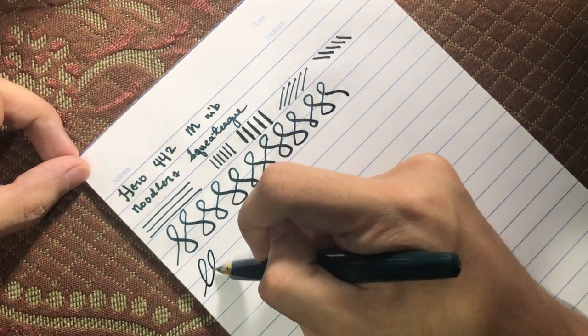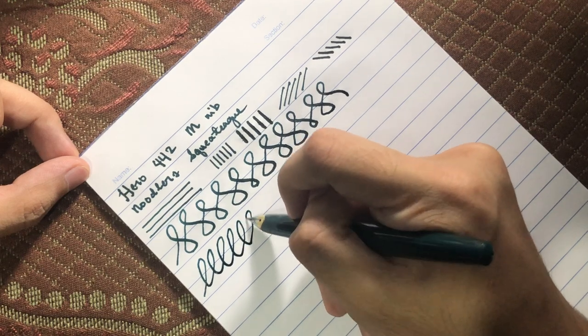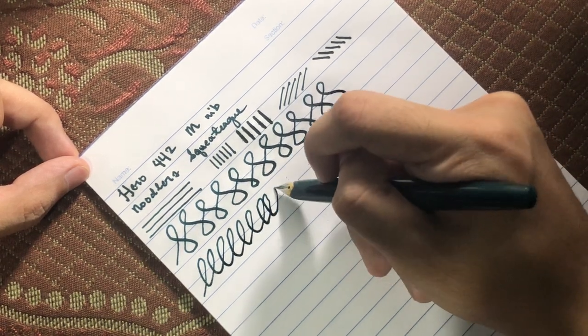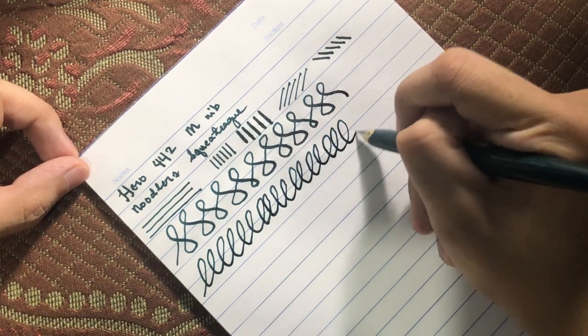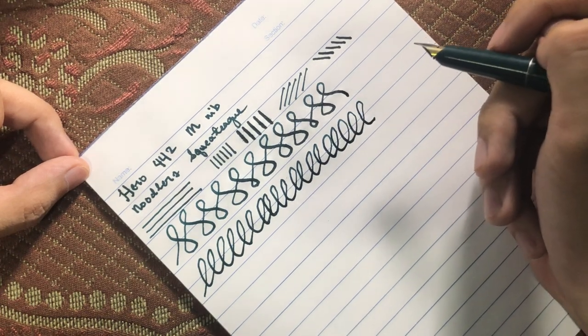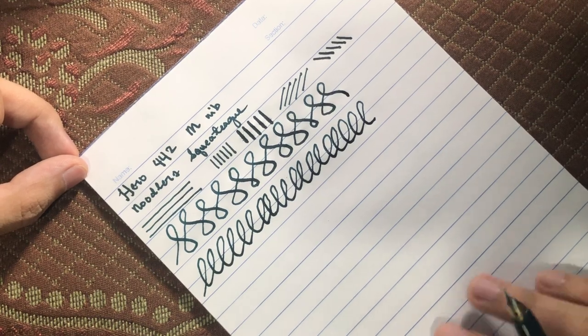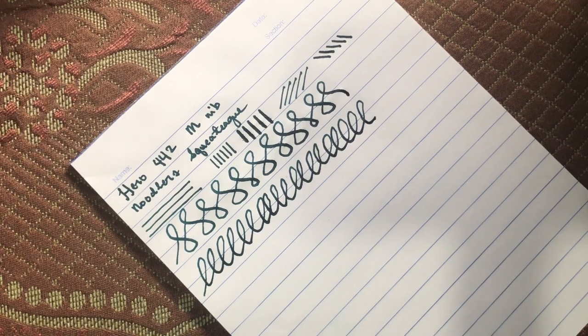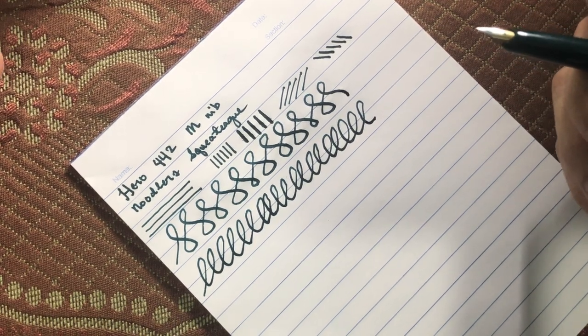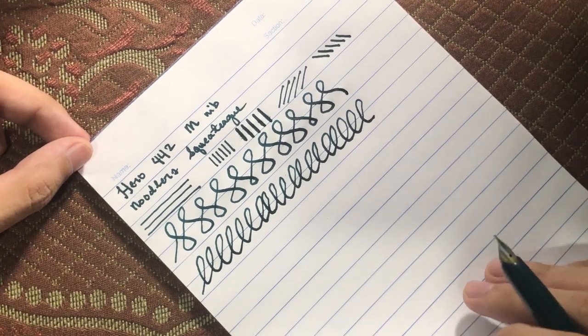Some ovals. It is indeed a very wet writer, so I'm guessing that we will be having some bleed-through. Oh yeah, there we go. But then again, if we are going to use some pens that are not this wet, you won't be experiencing this very grave degree of bleed-throughs.